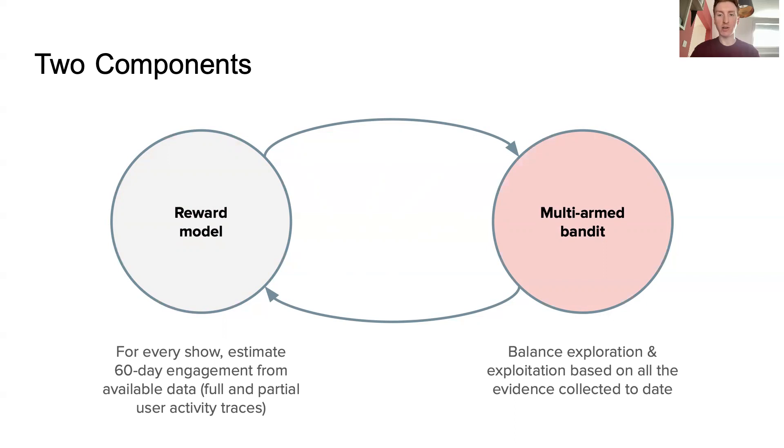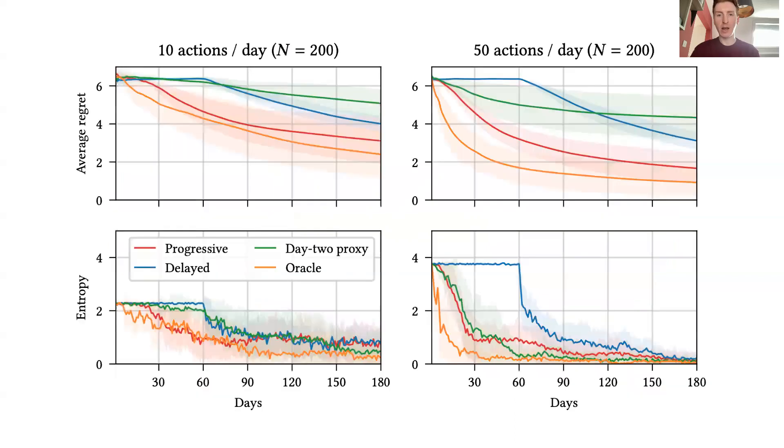On real-world Spotify platform data, the impatient bandit denoted by progressive results in lower regret compared to the short-term proxy and delayed approaches mentioned earlier, and approaches the performance of an oracle algorithm which receives full user traces immediately after an action is taken.